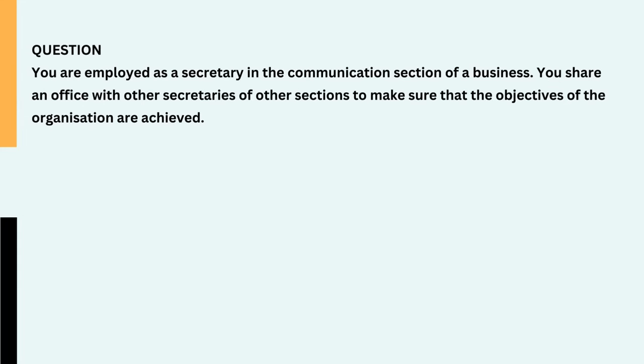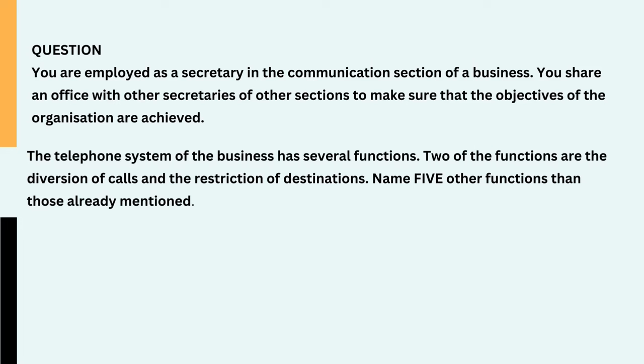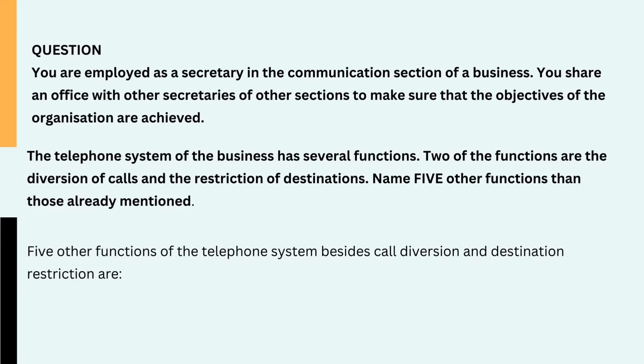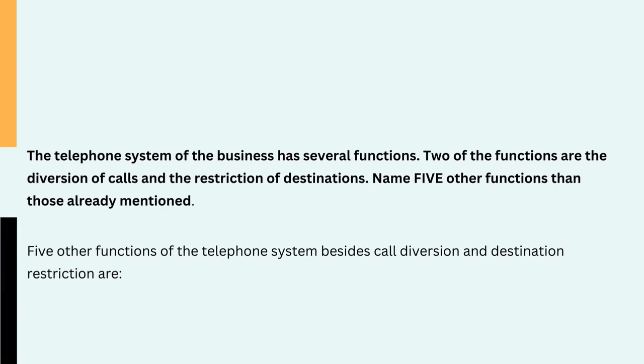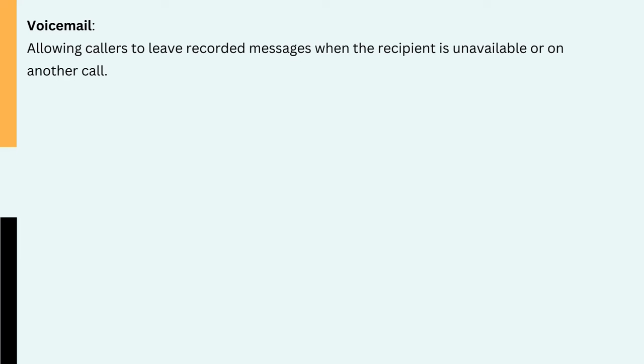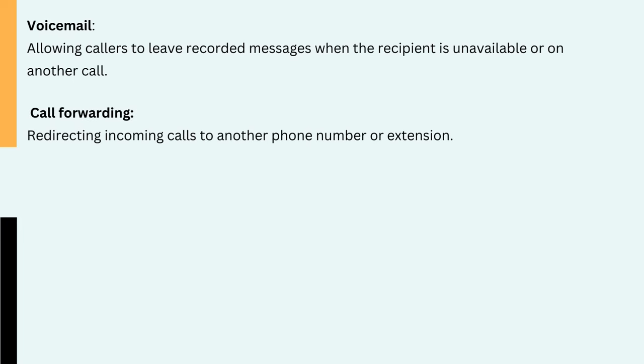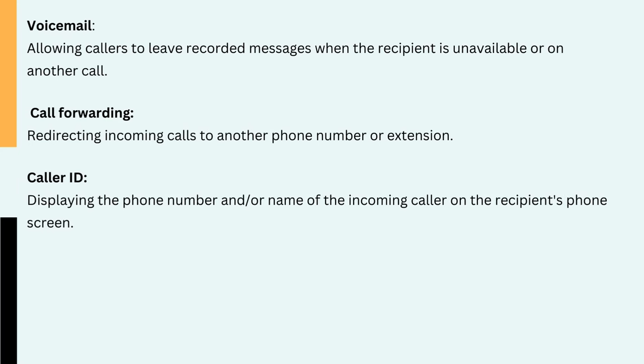Question: You are employed as a secretary in the communication section of a business. You share an office with other secretaries. The telephone system of the business has several functions; two of the functions are the diversion of calls and the restriction of destinations. Name five other functions than those already mentioned. Five other functions of the telephone system besides call diversion and destination restriction are: 1. Voicemail — allowing callers to leave recorded messages when the recipient is unavailable or on another call. 2. Call forwarding — redirecting incoming calls to another phone number or extension. 3. Caller ID — displaying the phone number and/or name of the incoming caller on the recipient's phone screen.